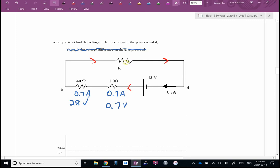How many amps? 0.7. How many volts? Well, I started with 45. I lost 0.7. I lost 28. This is my final ski hill, and apparently that got me to the bottom of the circuit. How many volts? 16.3.